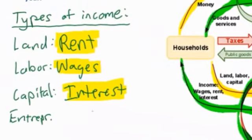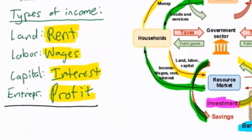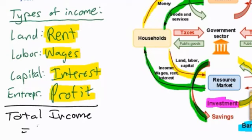That leaves us with entrepreneurship. Some households are entrepreneurs — these are the business owners who seek profits by opening a business of their own, starting a business enterprise. If a household starts his or her own business, they are ultimately seeking profits. Therefore, the income earned by households who start their own business is known as profit. If we take the total rents, wages, interest payments, and profits earned by households, we get the total income of the nation, which when summed together will give us the GDP, or the gross domestic product of the nation.